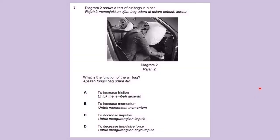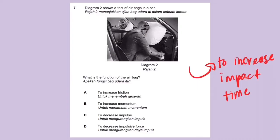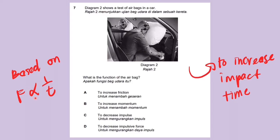Let's answer a question together. The diagram shows a test of airbags in a car. What is the function of the airbag? The primary function of the airbag is to increase the impact time of the passenger if there is a car collision. Therefore, based on the relationship of impulsive force — since it is inversely proportional to the impact time — the answer would be D: the function of the airbag is to decrease the impulsive force.